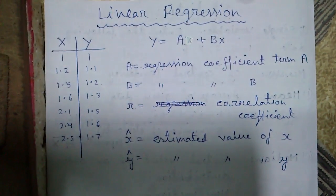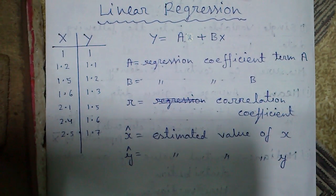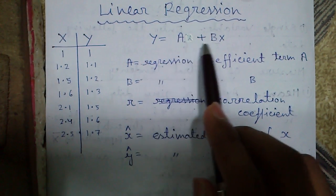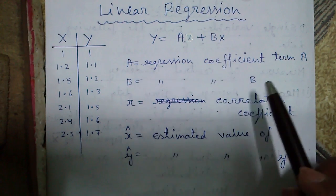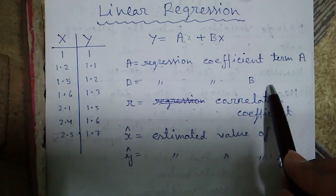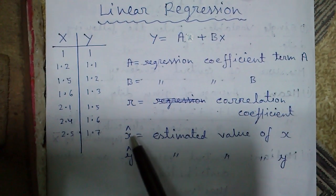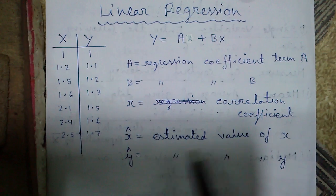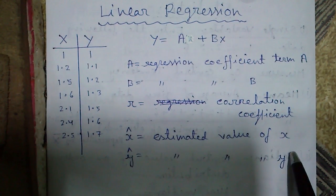Next is linear regression. Linear regression is given by y equals a plus bx where a is the linear regression coefficient term A and b is the regression coefficient term B. r is the correlation coefficient and x bar is the estimated values of x and y bar is the estimated values of y.